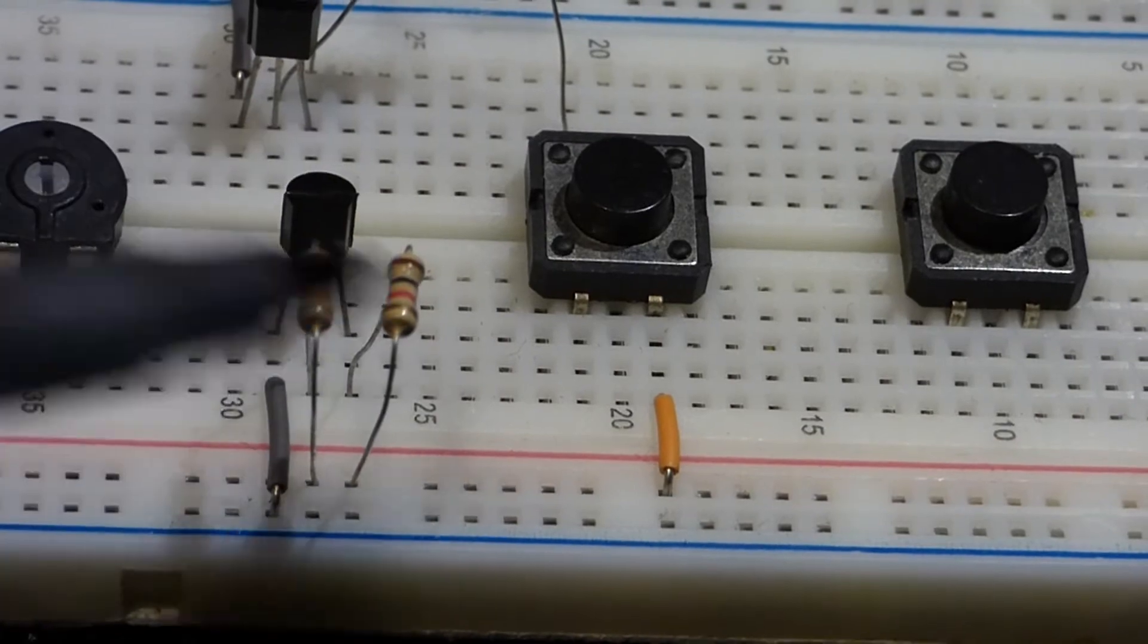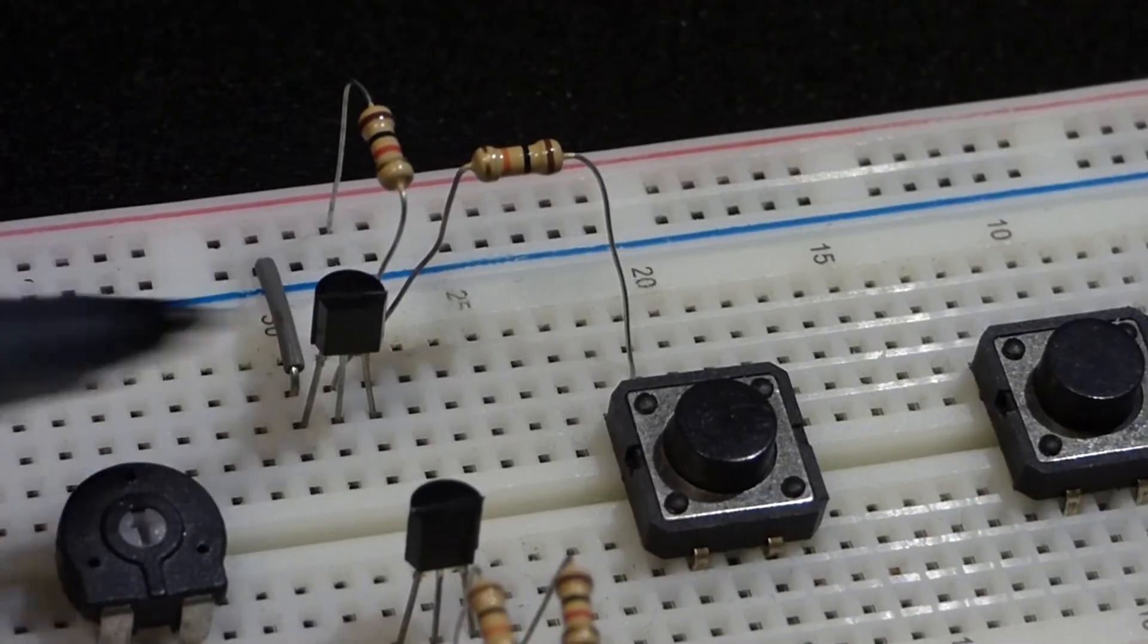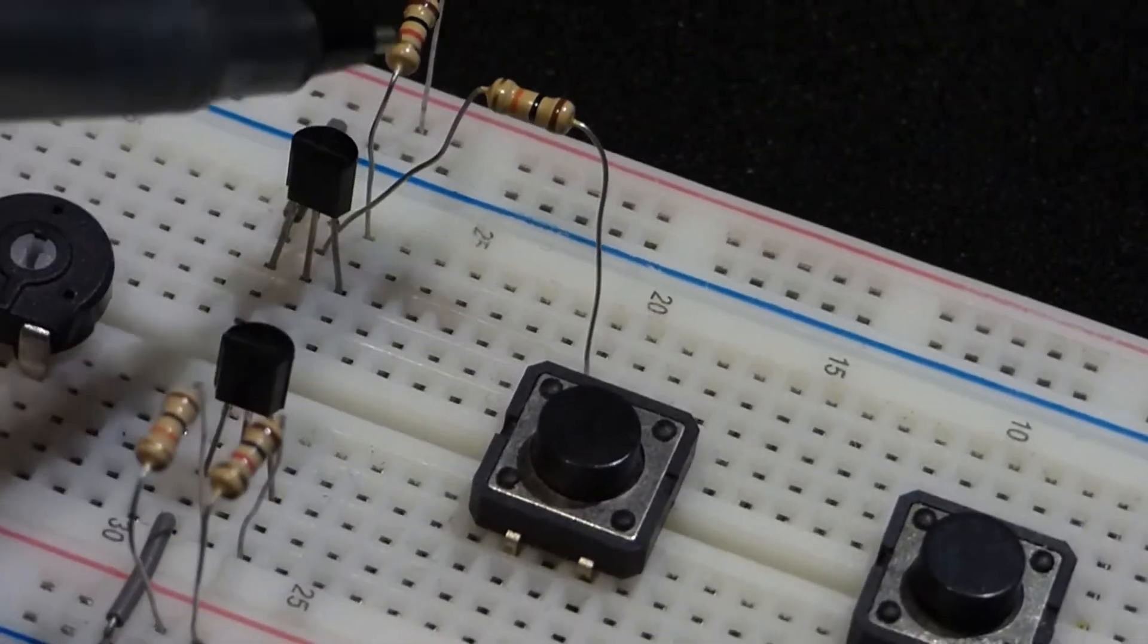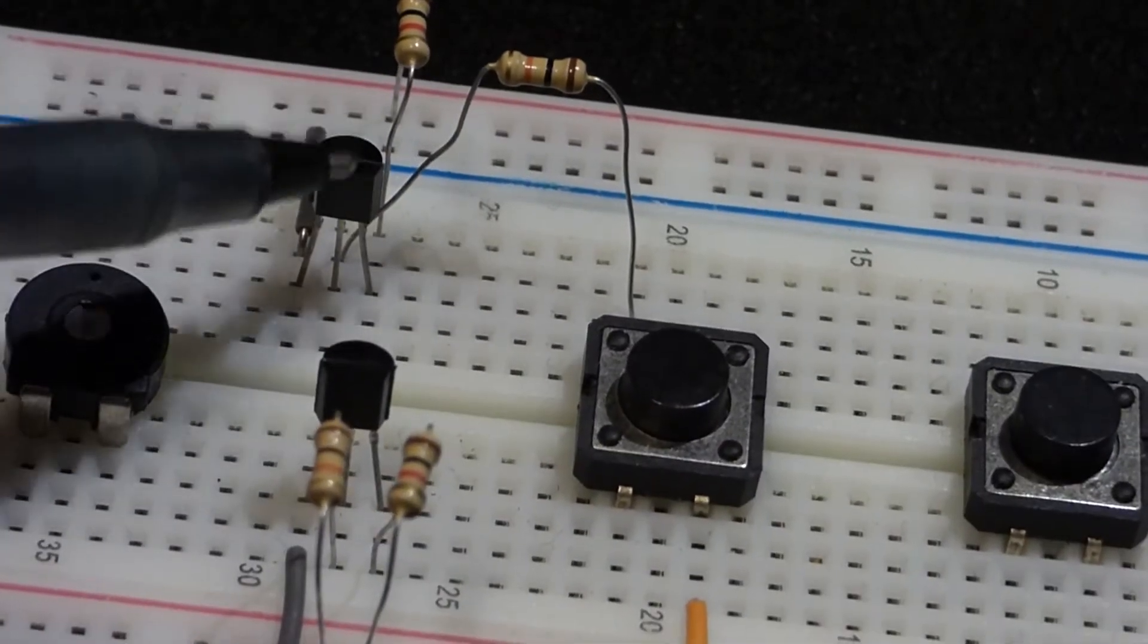And then this resistor, 1 kilohm resistor, limits the current going through the transistor. And then again, this one's really similar. Down at the emitter, directly to ground. The collector up here has a 1 kilohm resistor there.